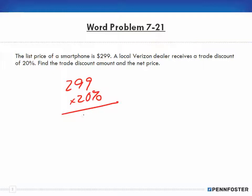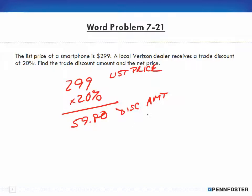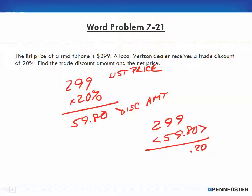20% of $299 ends up being $59.80, so that's our discount amount. Our list price is $299, and to find the net price we take $299 and subtract the discount amount of $59.80, which ends up being $239.20. So our net price is $239.20 — relatively simple.